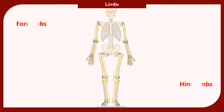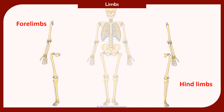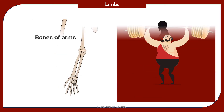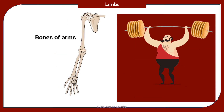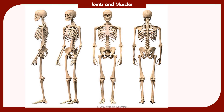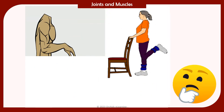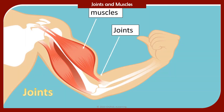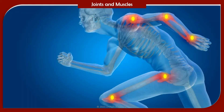We have two pairs of limbs. The hind limbs — legs — are used for walking. The forelimbs — arms — allow us to do a variety of tasks such as lifting and using objects. But bones are rigid structures that cannot bend. So how do we bend our elbows and knees? All our movements are brought about by joints and muscles.